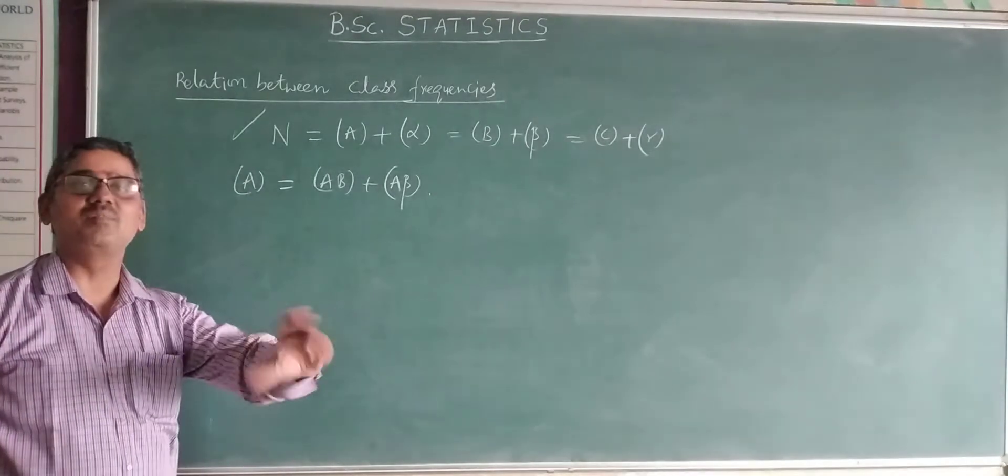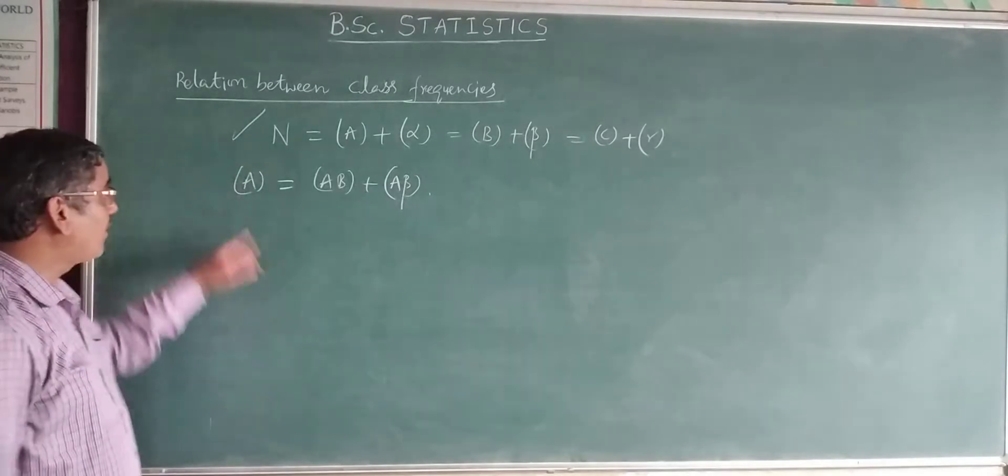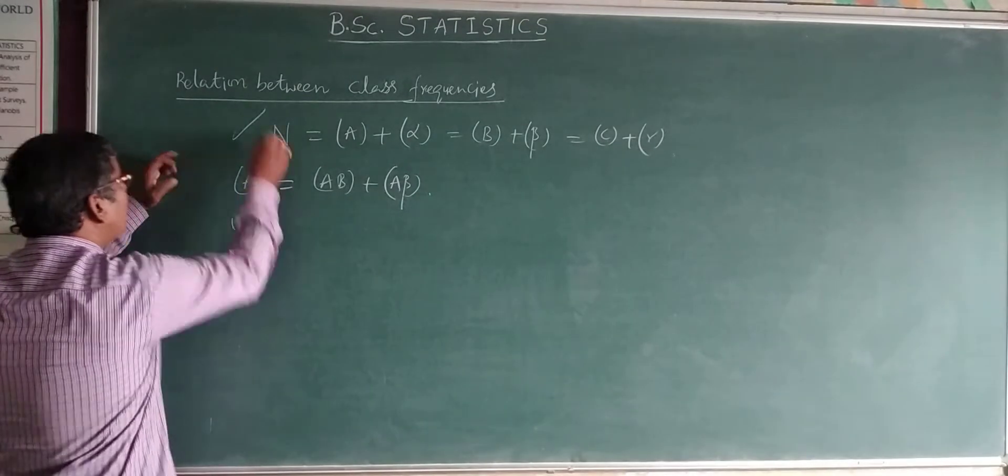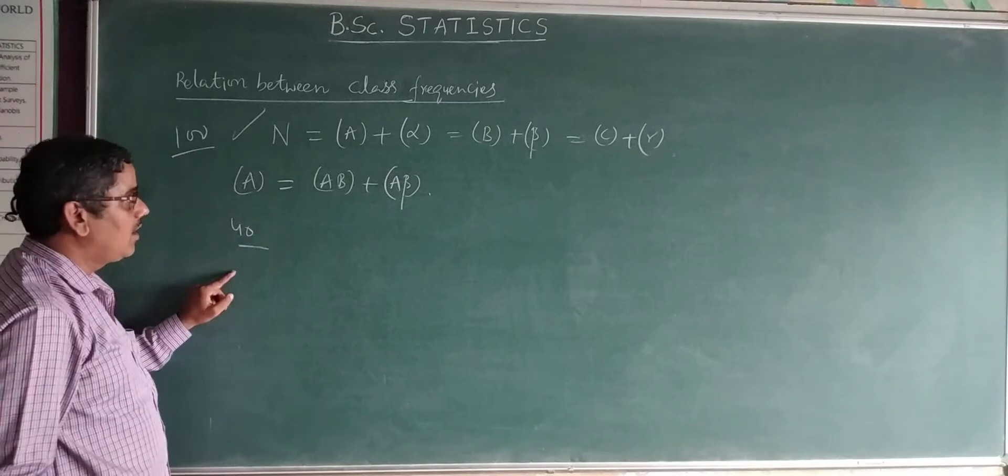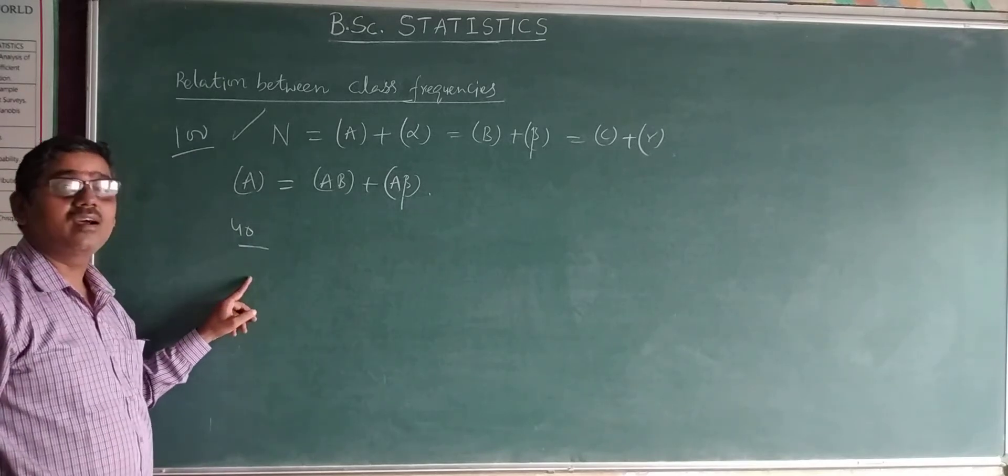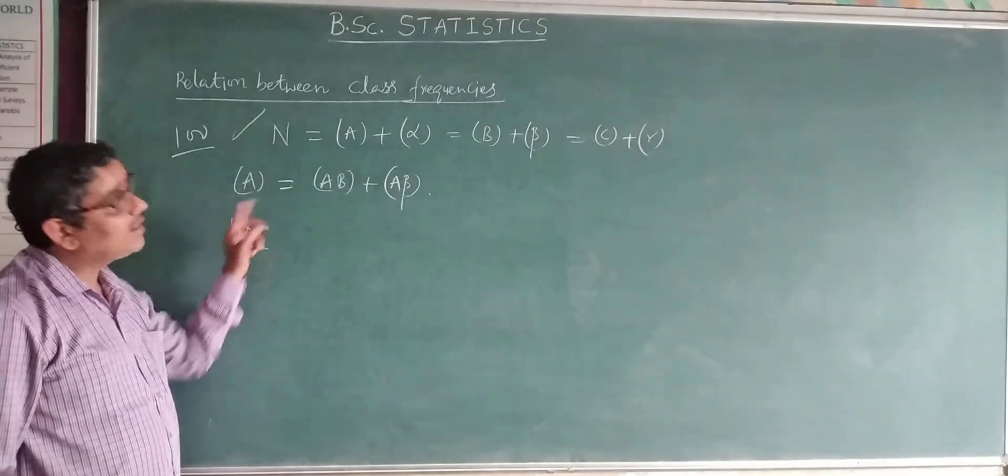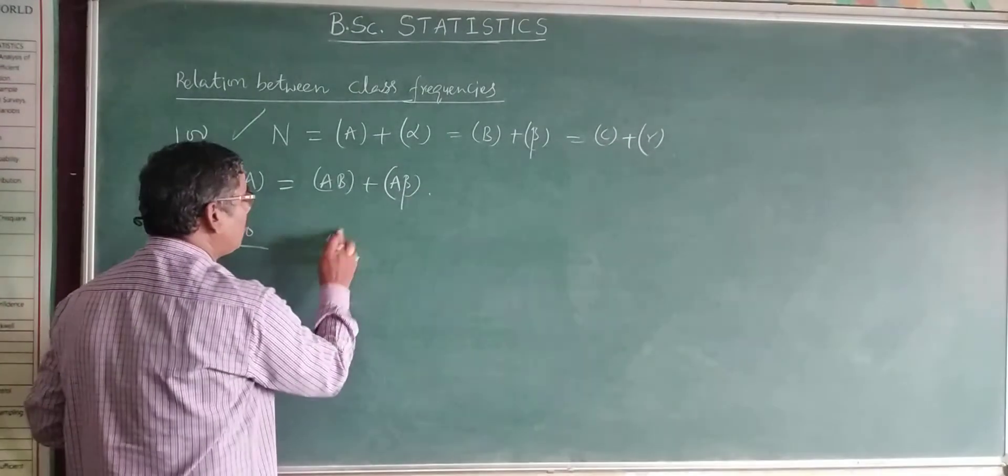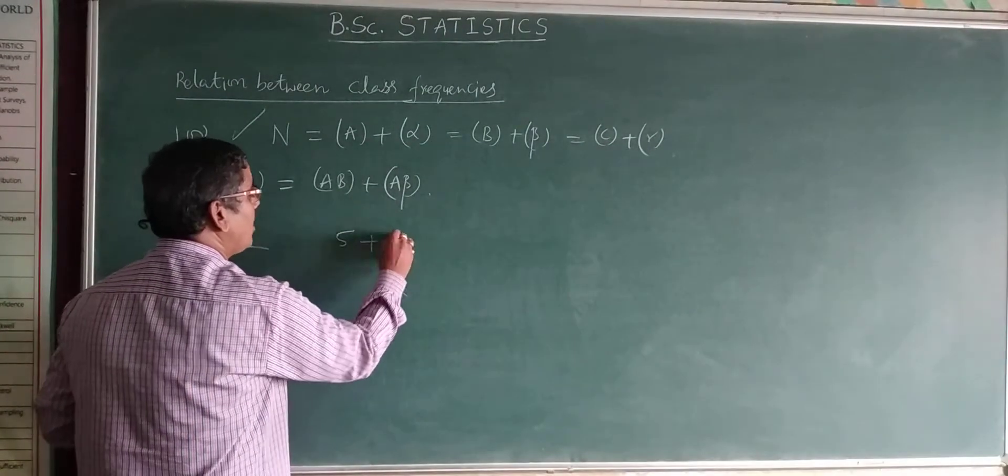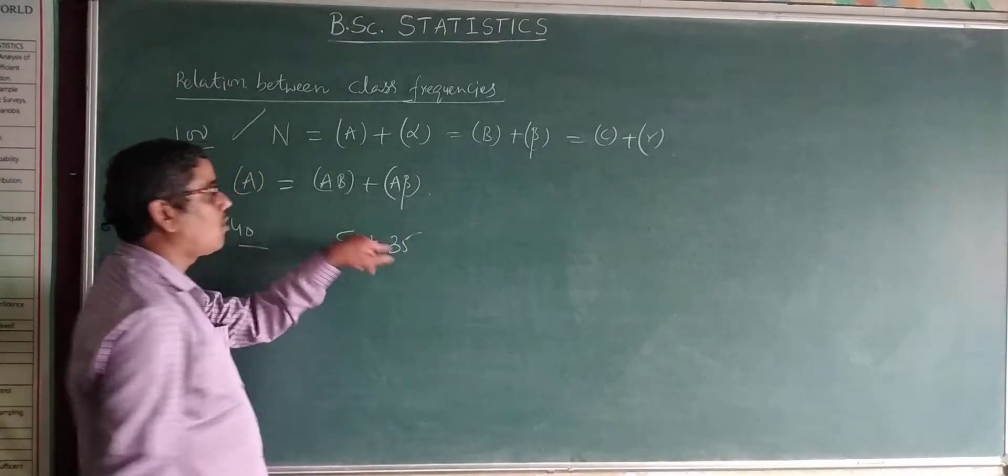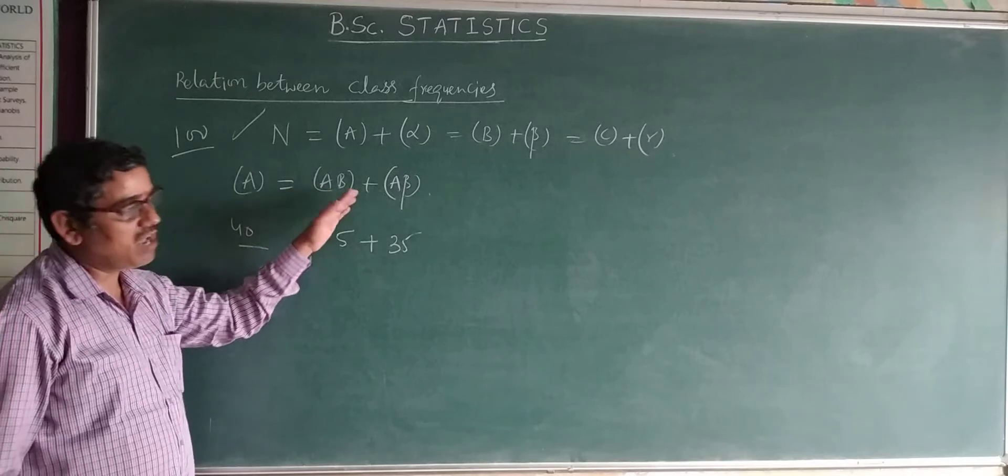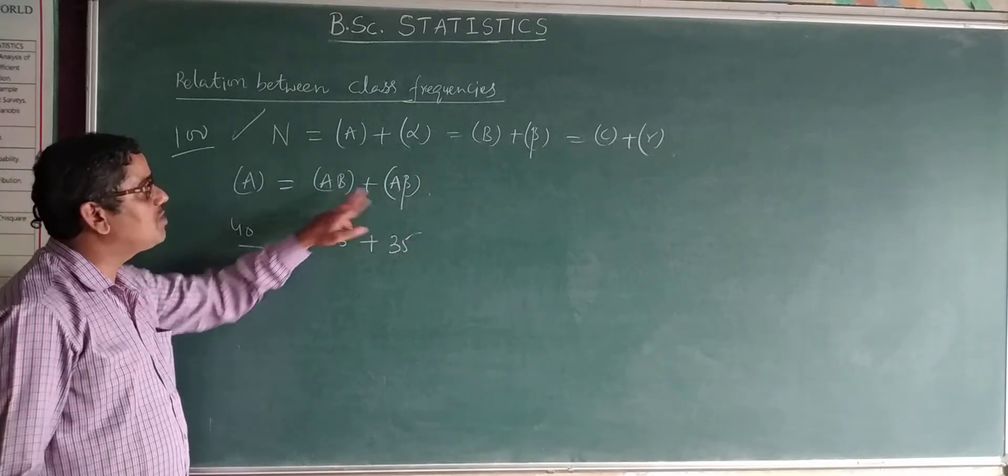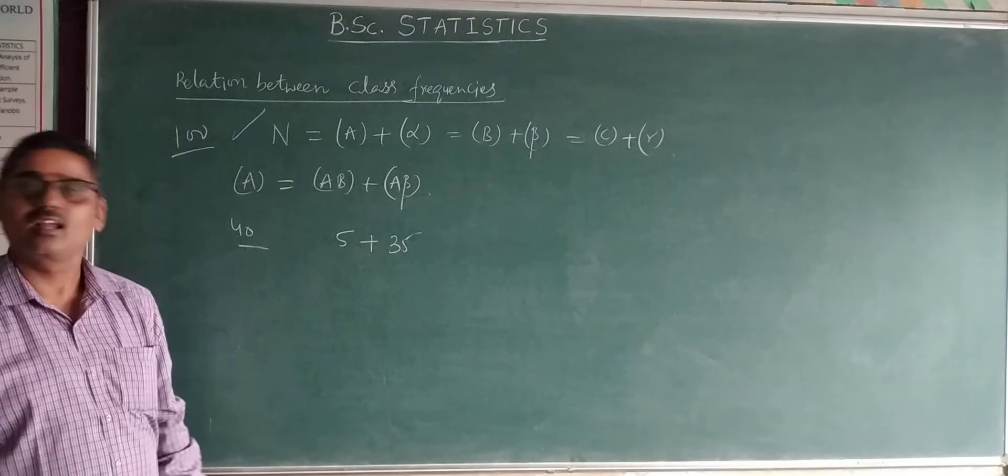For example, literates are 40. If you want to calculate literate drinkers, for example, there are 5, then remaining 35 will be literate non-drinkers. That is the relation between A with AB, that is A with B and A with beta. AB plus Aβ equals A. Clear?